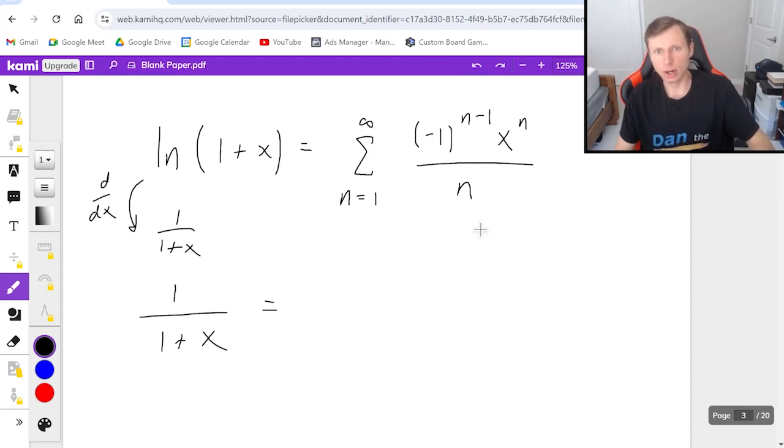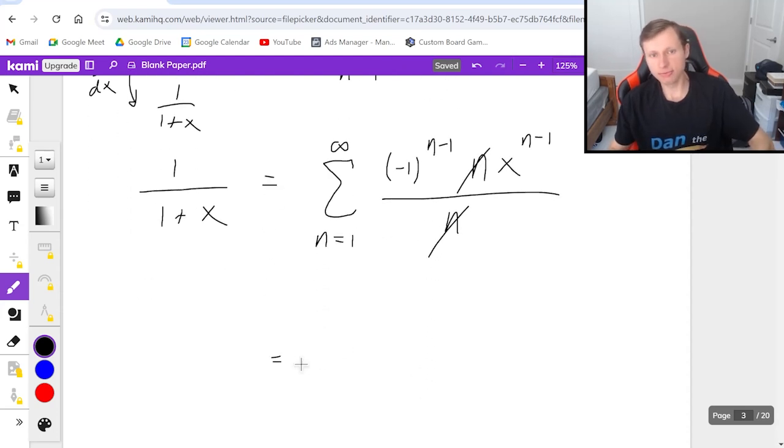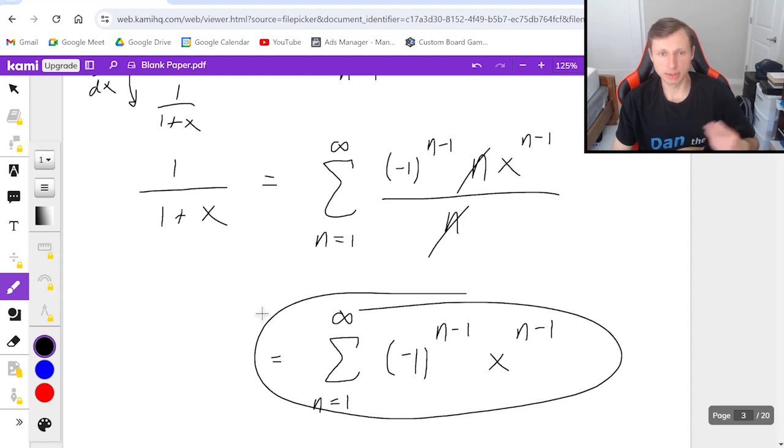But how do I take the derivative of this? Well, remember, n is just a coefficient. It really doesn't matter. The only thing that matters is the x. And this is a power rule because it's x to the n. So the power rule tells us the derivative is going to be, first, write the coefficient out in front. Then I bring the n down from the exponent and it's n minus 1, still divided by n. As you can see, these n's end up canceling. And so therefore, the final answer for this series is n equals 1 to infinity of negative 1 to the n minus 1 times x to the n minus 1. And there's my series.